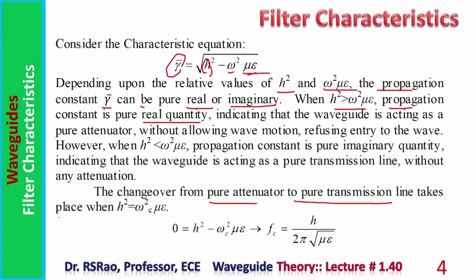The changeover from pure attenuation to pure transmission takes place at a certain frequency called fc (the cutoff frequency, ωc). At this changeover frequency, h² = ωc²με. During this changeover, γ becomes zero: 0 = h² − ωc²με. Solving this, we get the cutoff frequency fc = h / (2π√με).